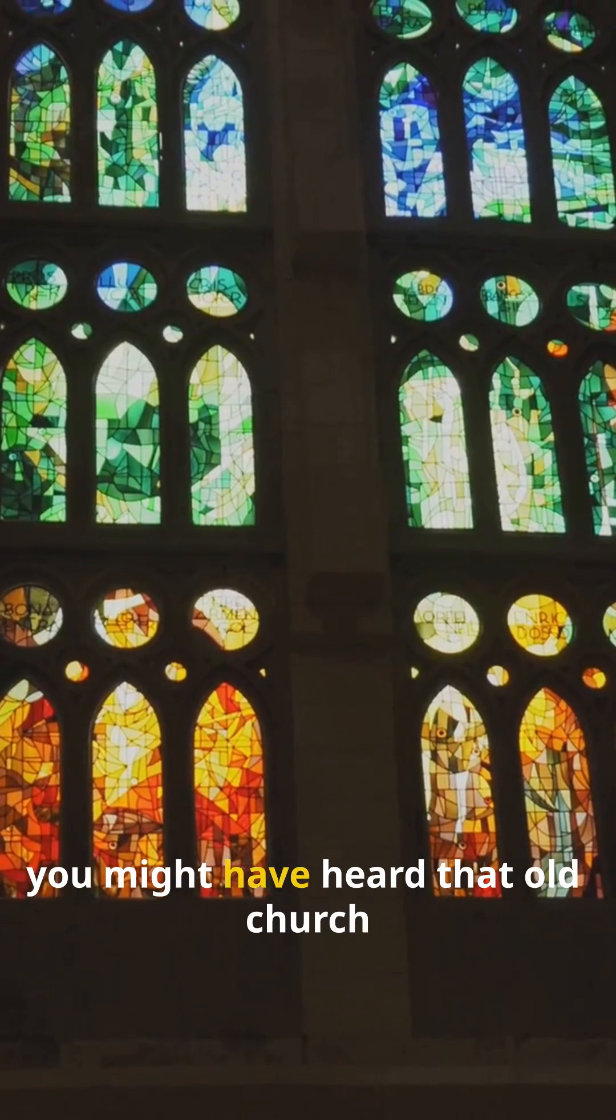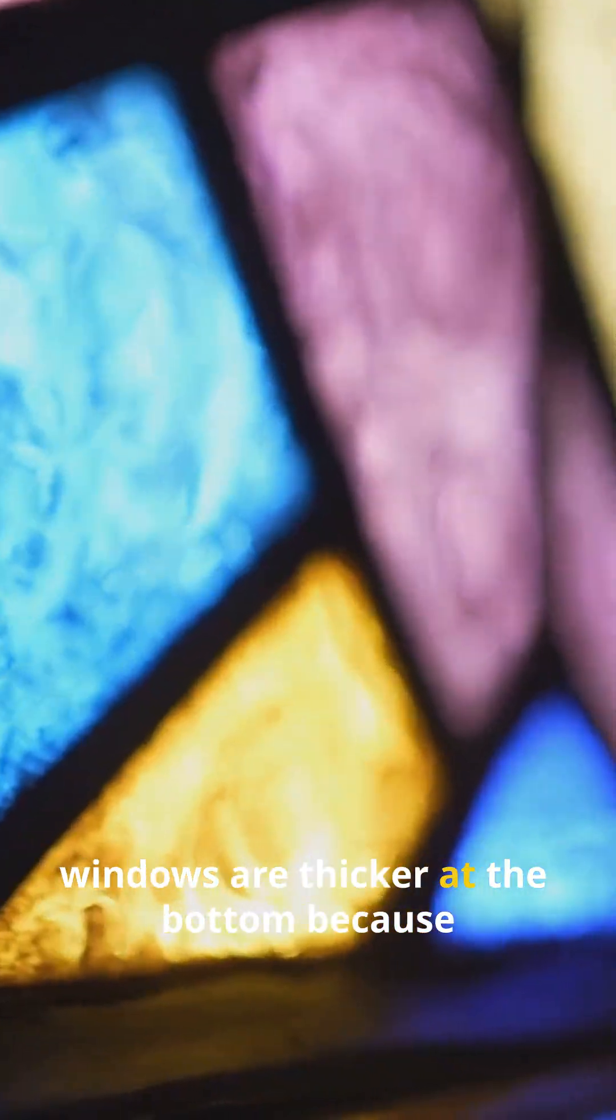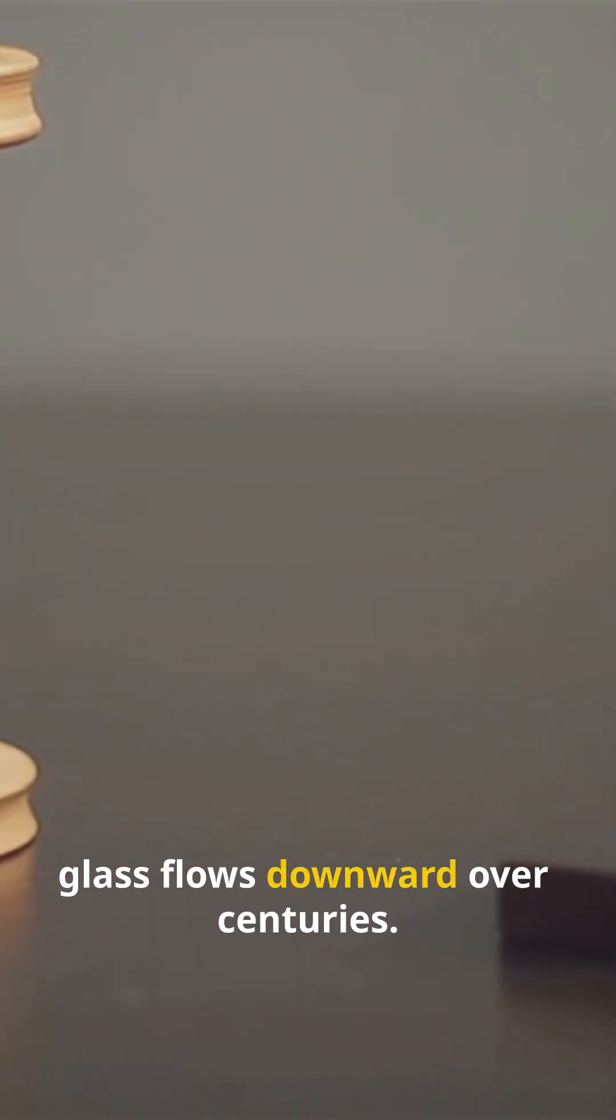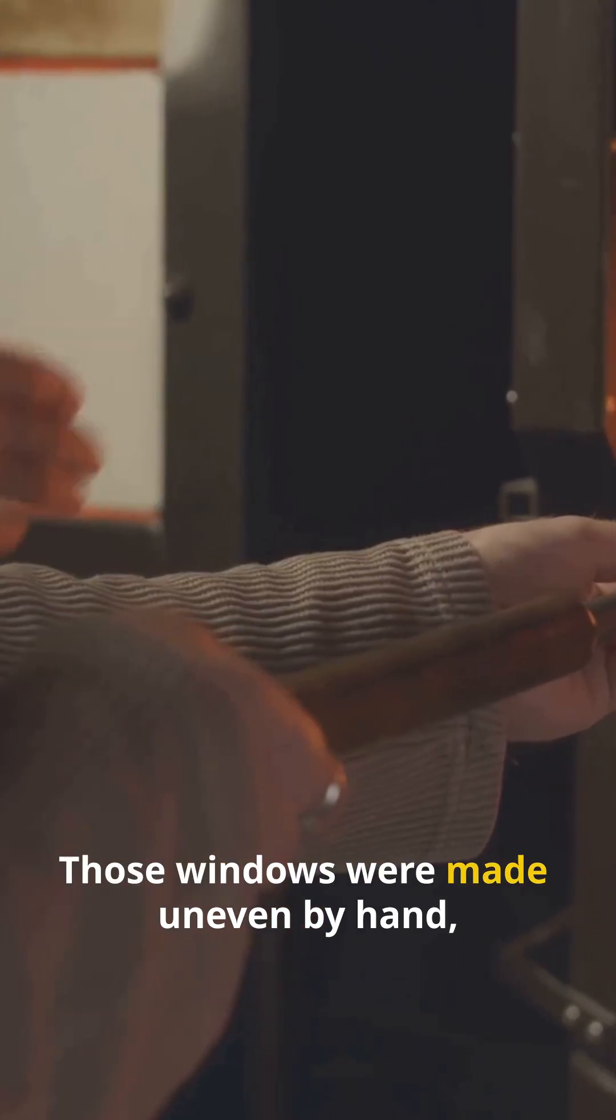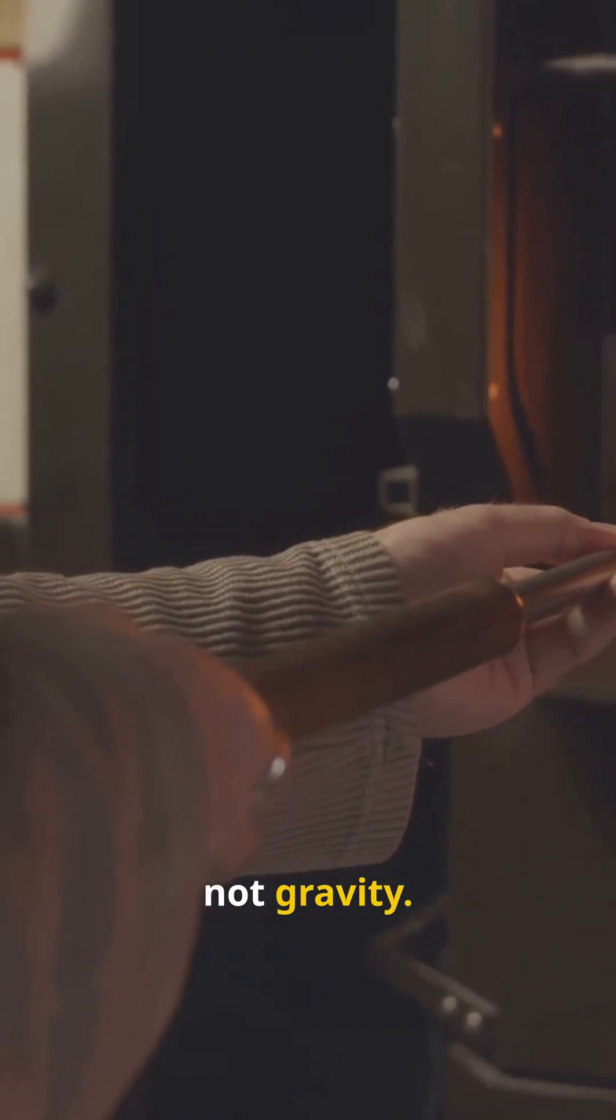Now, you might have heard that old church windows are thicker at the bottom because glass flows downward over centuries. Sounds wild, but it's actually just a myth. Those windows were made uneven by hand, not gravity.